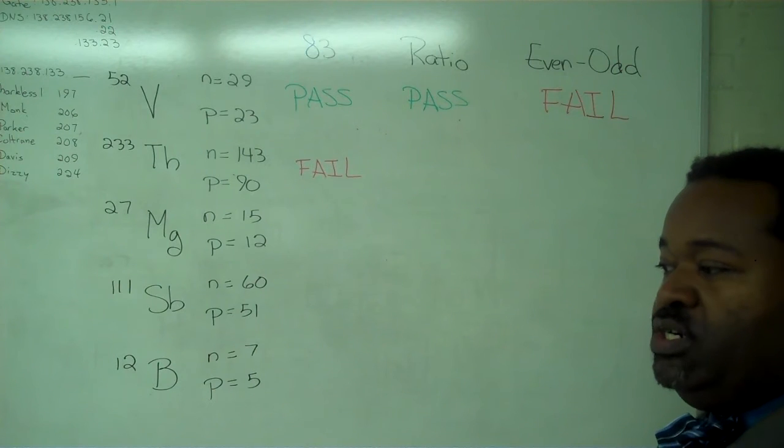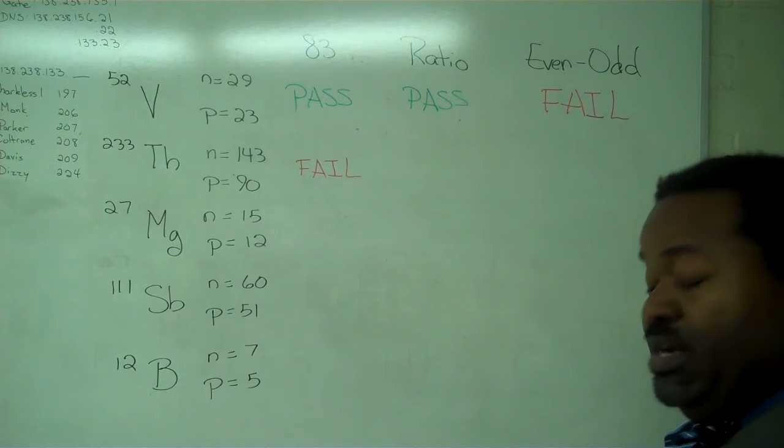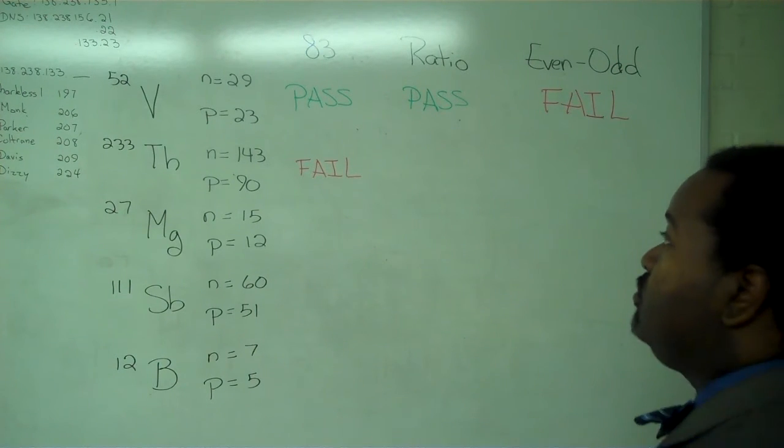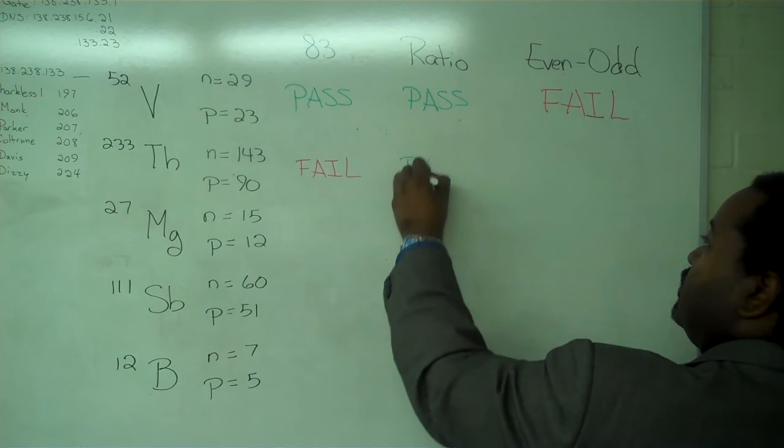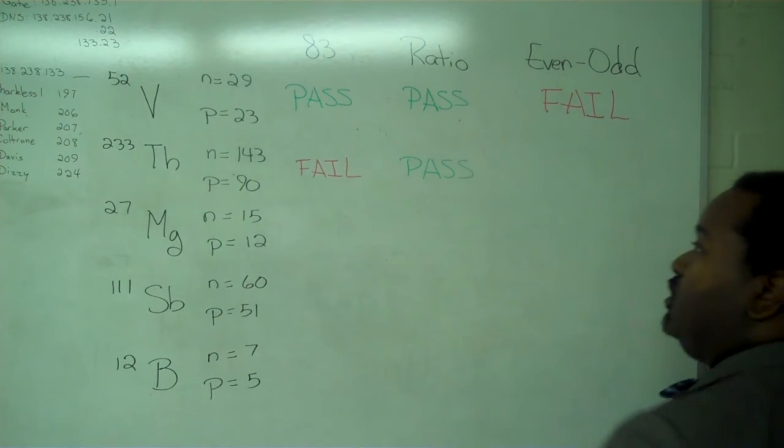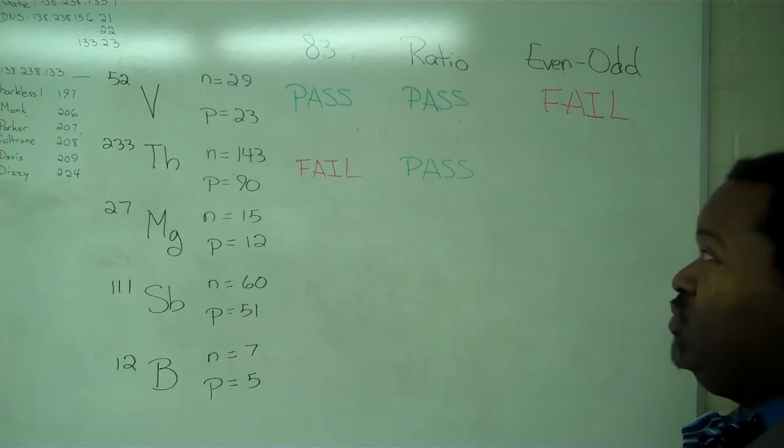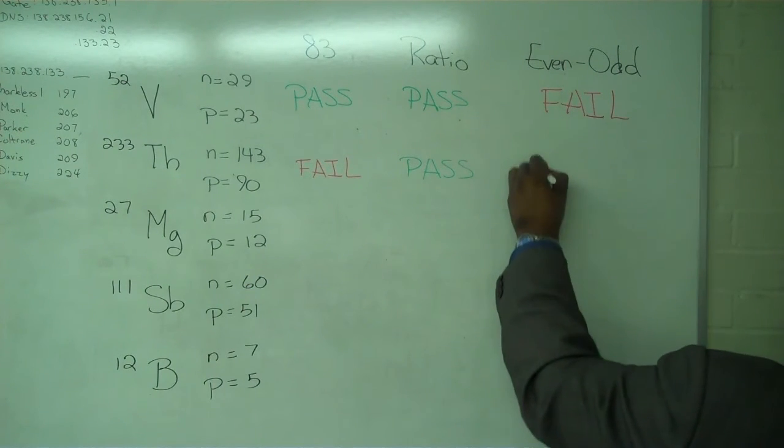For the ratio test, 143 divided by 90 is bigger than 1. So this is a pass. On the even-odd test, 143 is an odd number. So this is a fail.